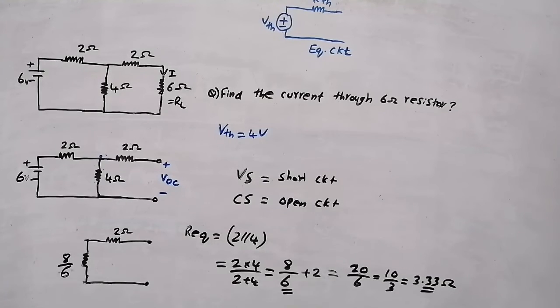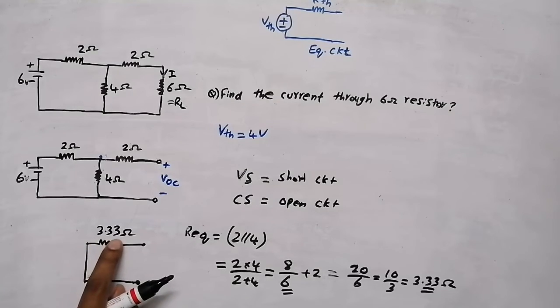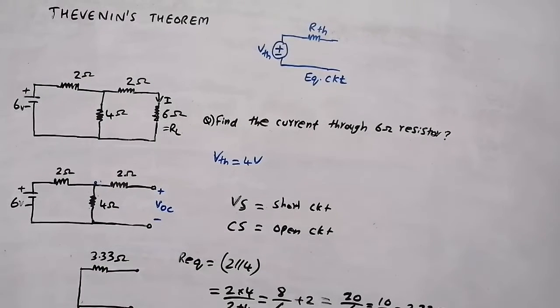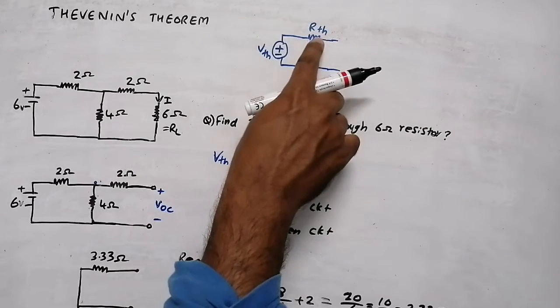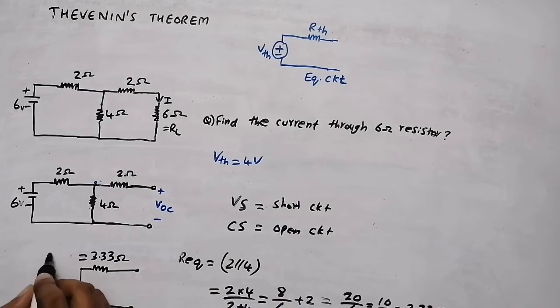That will be our equivalent resistance. So we got the value of Rth — Thevenin's resistance — as 3.33 ohm.